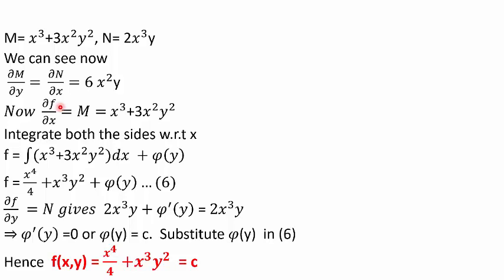Multiplying by x², the new M = x³ + 3x²y² and new N = 2x³y. del M by del y and del N by del x are both 6x²y — equal, so the equation is exact. Setting del f by del x = M and integrating gives f = x⁴/4 + x³y² + φ(y). Differentiating with respect to y and equating to N gives φ'(y) = 0, so φ(y) = c. The solution is x⁴/4 + x³y² = c.